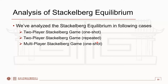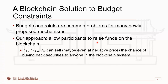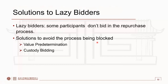We also discussed two practical problems. The first is budget constraints, which are common in many newly proposed mechanisms. Participants in all repurchase mechanisms may need to pay for the repurchase. We have a blockchain solution: we allow participants to raise funds on the blockchain, and participants can sell the chance of buying back securities to anyone in the blockchain system — the price of that chance can even be negative. The second problem is that some participants may not bid in the repurchase process. We have solutions to protect these lazy bidders while ensuring the normal operation of the repurchase scheme.